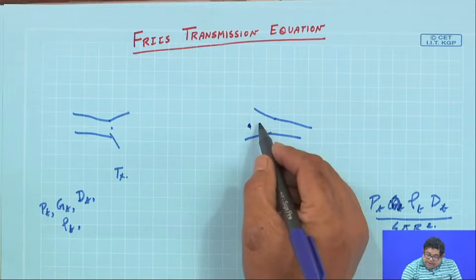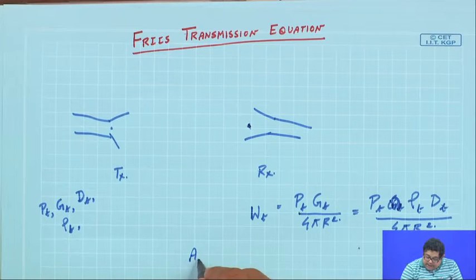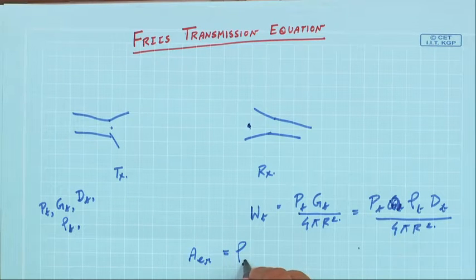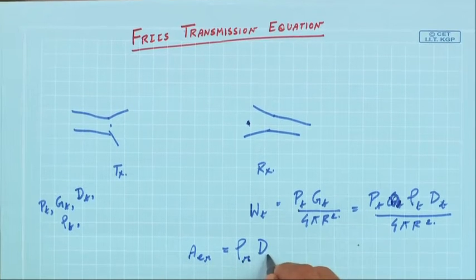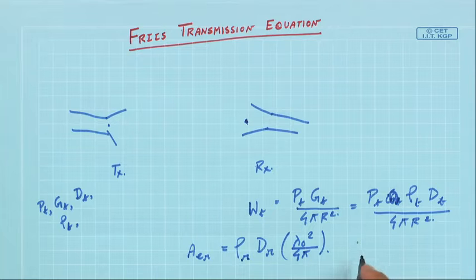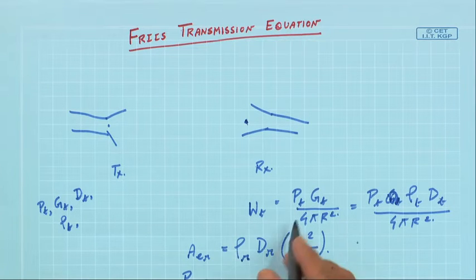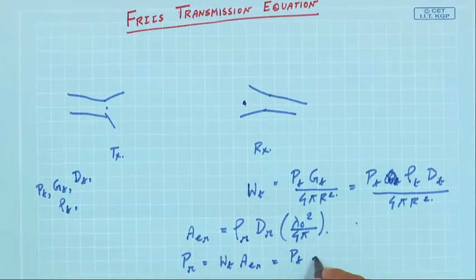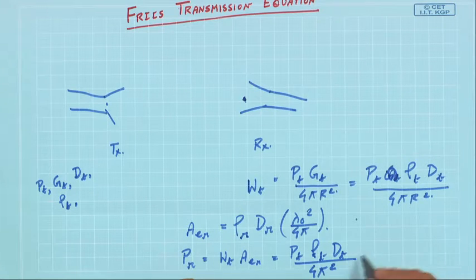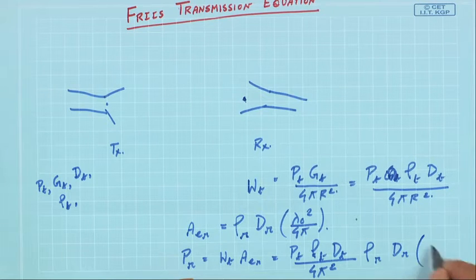Now this antenna has an effective area. The receiving antenna has an effective area A_er = ρ_r * D_r * λ₀² / (4π), as we derived in the last lecture. The power collected will be P_r = W_t * A_er, which gives P_t * ρ_t * D_t / (4πr²) times ρ_r * D_r * λ₀² / (4π).